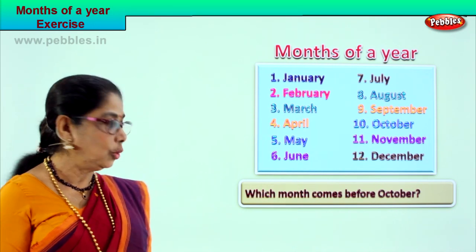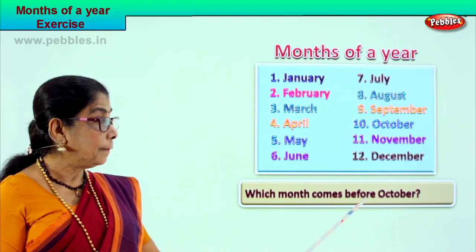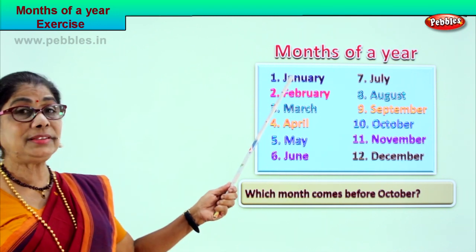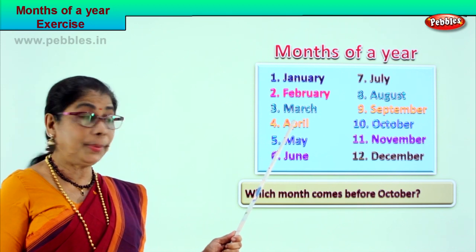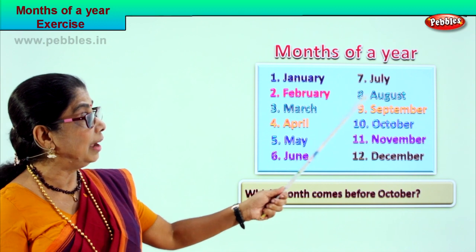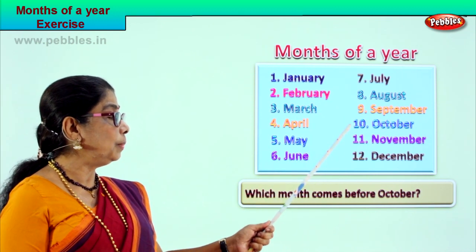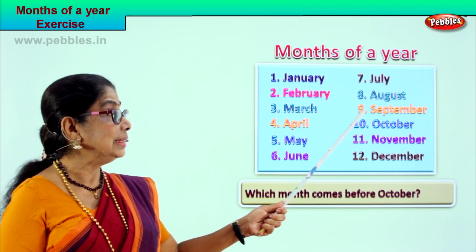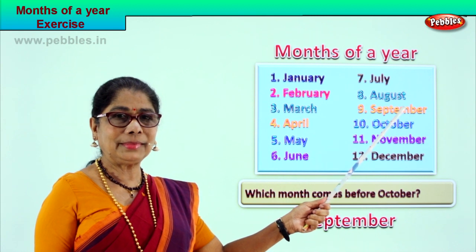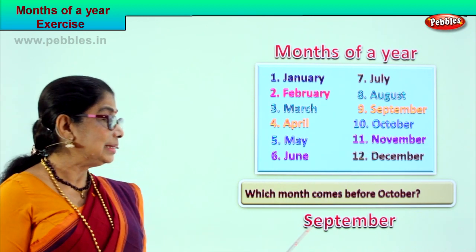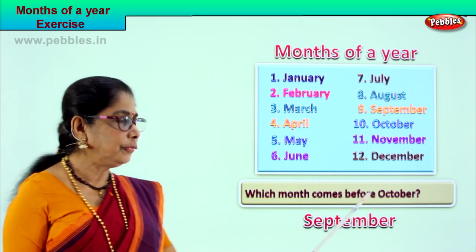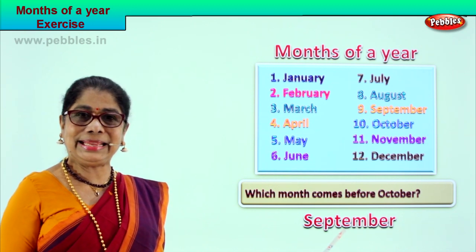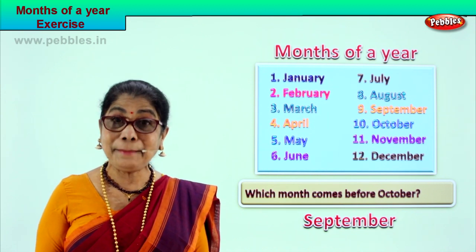Shall we go to another question? Look at the question, read along with me: Which month comes before October? Let's look — January, February, March, April, May, June, July, August, September, October. The question is which month comes before October? September. The month that comes before October is September. Spell September: S-E-P-T-E-M-B-E-R. Good.